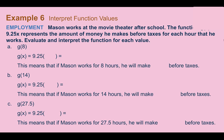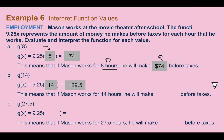Example 6 — interpret function values: Mason works at the movie theater. The function g of x equals 9.25x represents his earnings before taxes per hour. For g of 8, we plug in 8 for x — if Mason works 8 hours, x is the number of hours and 9.25 times 8 equals 74, so he makes $74. For g of 14, plugging in 14 gives 129.5, so he makes $129.50.